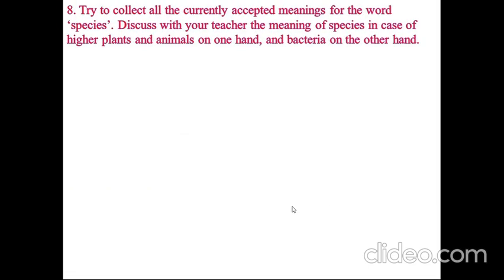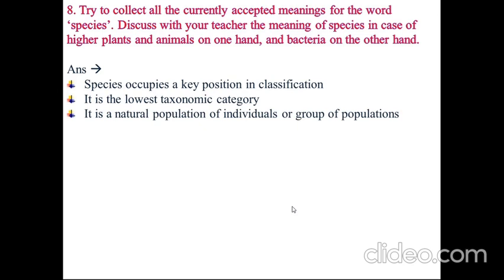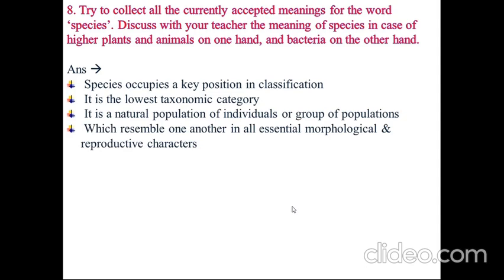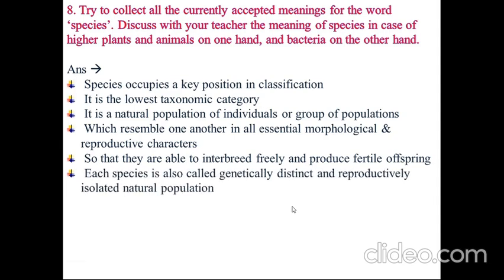Try to collect all the currently accepted meanings for the word species. Discuss with your teacher the meaning of species in case of higher plants and animals on one hand, and bacteria on the other hand. Species occupies a key position in classification. It is the lowest taxonomic category. It is a natural population of individuals or groups of population which resemble one another in all essential morphological and reproductive characters, so that they are able to interbreed freely and produce fertile offspring. Each species is also called a genetically distinct and reproductively isolated natural population.